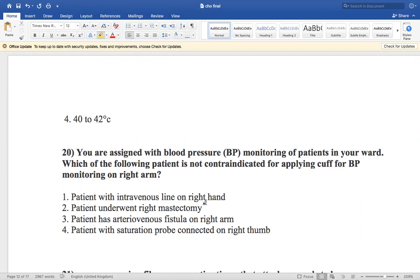Patient with intravenous line on the right hand, patient underwent right mastectomy, patient has arteriovenous fistula on right arm, and patient with saturation probe connected on right thumb. So patient with saturation probe connected on right thumb, we can take BP on right side of their right arm.